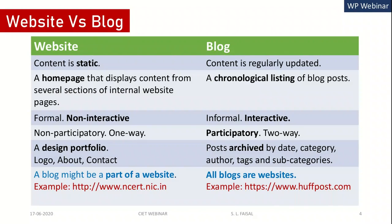On a website, there is a home page that displays content from several sections of internal pages. But on a blog, contents are a chronological listing of blog posts — the latest post appears on the top. A website is very formal and non-interactive, while blogs are informal and interactive. Websites have one-way communication, whereas a blog is participatory and allows two-way communication — visitors can comment and interact with the creator.